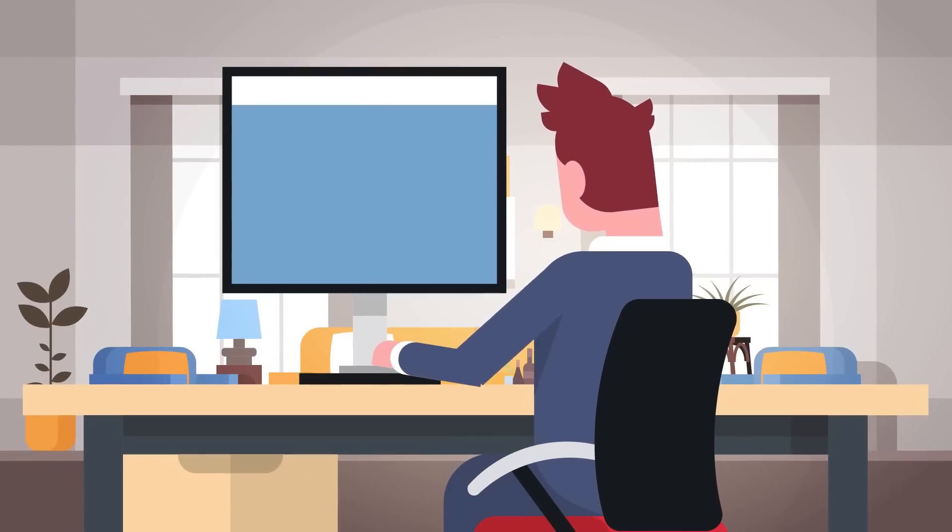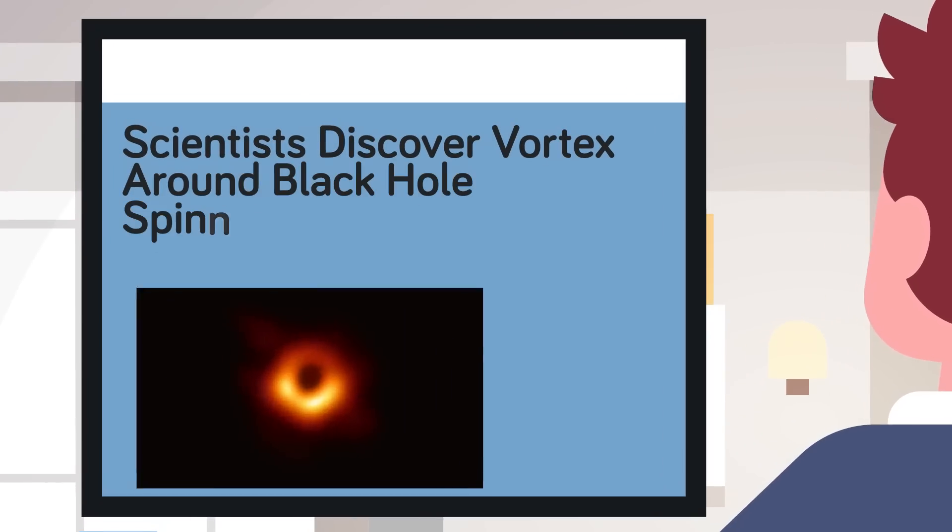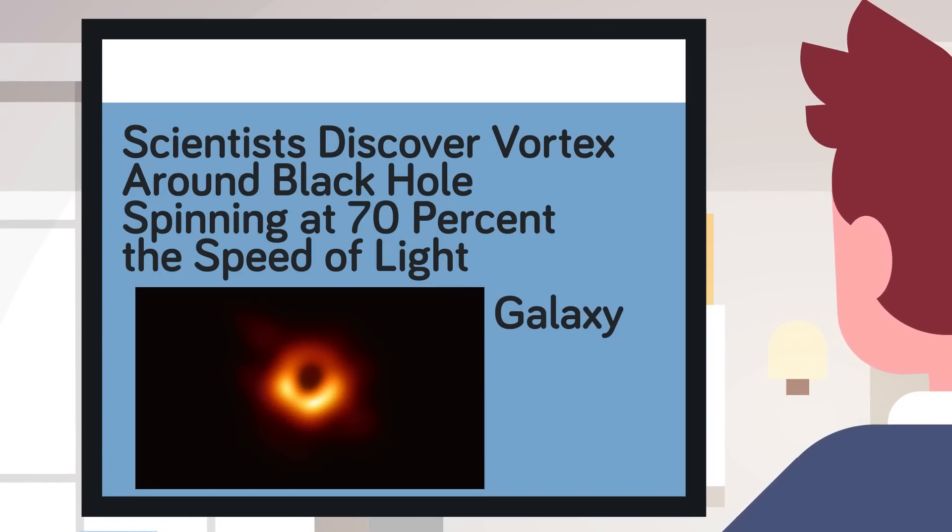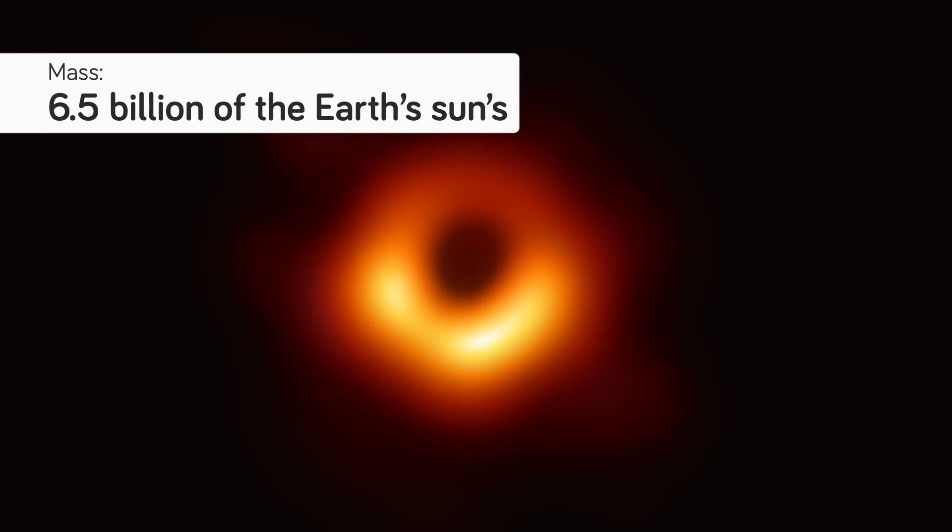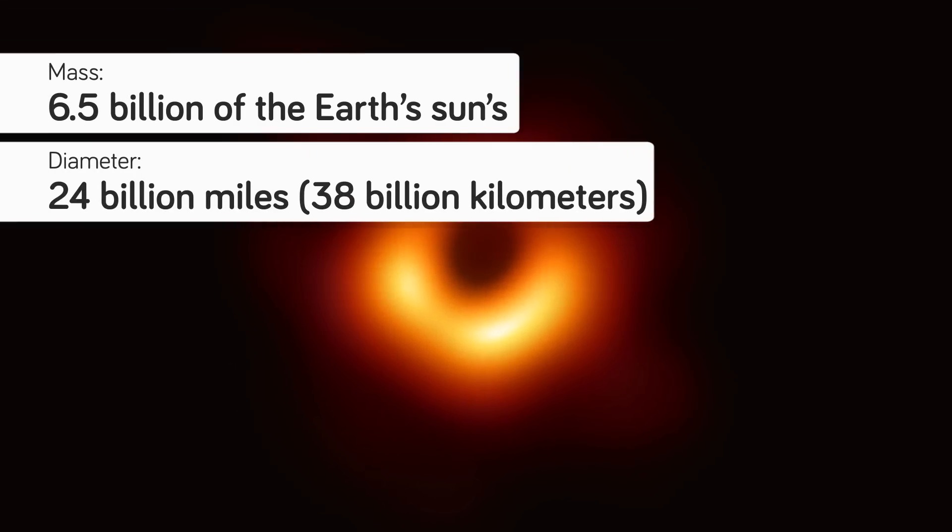This picture of a black hole was taken from the galaxy M87 and shows a supermassive black hole at the heart of the galaxy with a mass of 6.5 billion of the Earth's suns, and with a diameter of 24 billion miles.